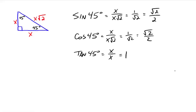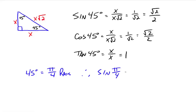That's in degrees, so what about radians? 45 degrees equals pi over 4 radians. Therefore, the sine of pi over 4 is the square root of 2 over 2, and the cosine of pi over 4 is also the square root of 2 over 2. We have to be fluent with both degrees and radians — the sine of pi over 4 is the same thing as the sine of 45 degrees, and they both give the square root of 2 over 2.